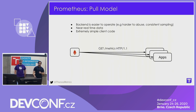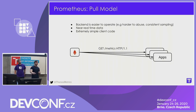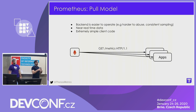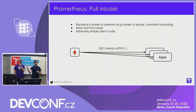Prometheus has been an open source project for about six years and is super well adopted. There are tons of different open source projects that already expose Prometheus metrics. If your project like Memcached doesn't expose metrics natively, there's probably some ecosystem exporter that can wrap that component. And it's really easy to write exporters as well.